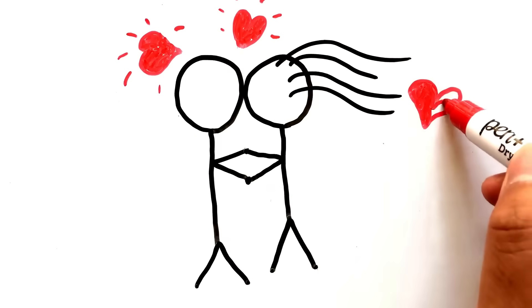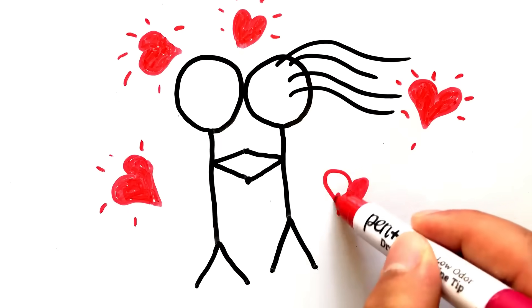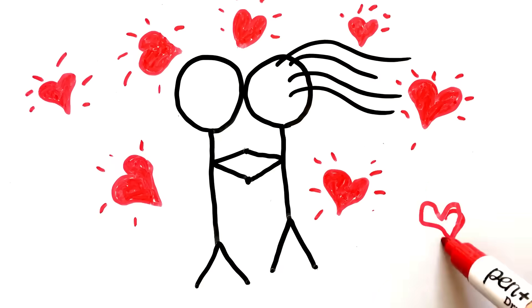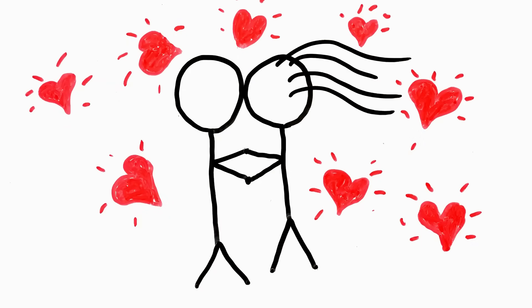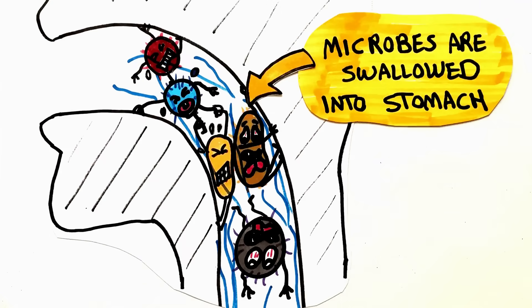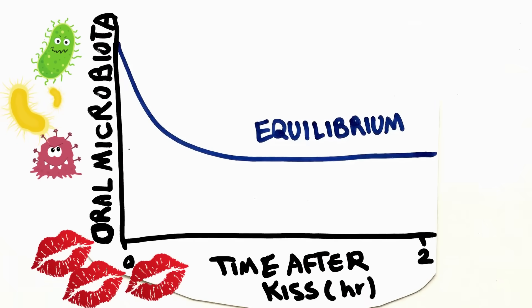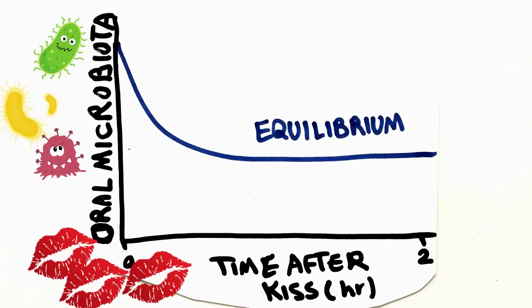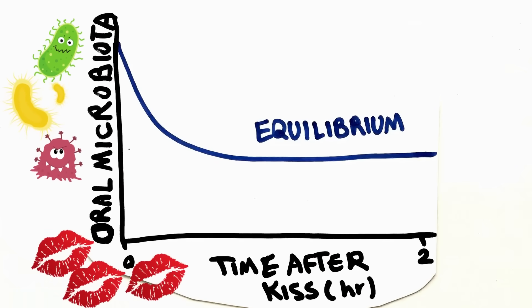Frequent intimate kissing plays a role in microbial exchange by saliva between partners. The exchanged microbes in the saliva are usually washed away after a few hours, bringing back the salivary microbiota of the individuals into its past equilibrium.